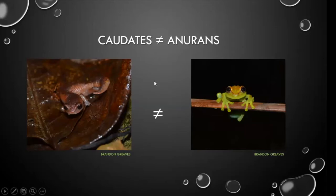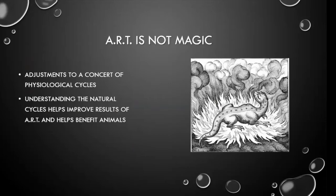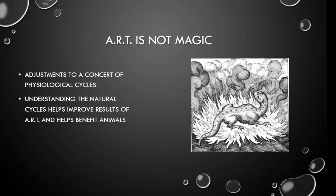Assisted reproductive technologies really are treatments — if we're using hormones on these animals we are adapting their physiology. ART is not magic. We're not just giving hormones and magically making them lay eggs or produce sperm, and cryopreservation isn't going to work magically on every species. We are adjusting a concert of physiological cycles that may vary from species to species, so it's really important to understand the anatomy and physiology before you start.